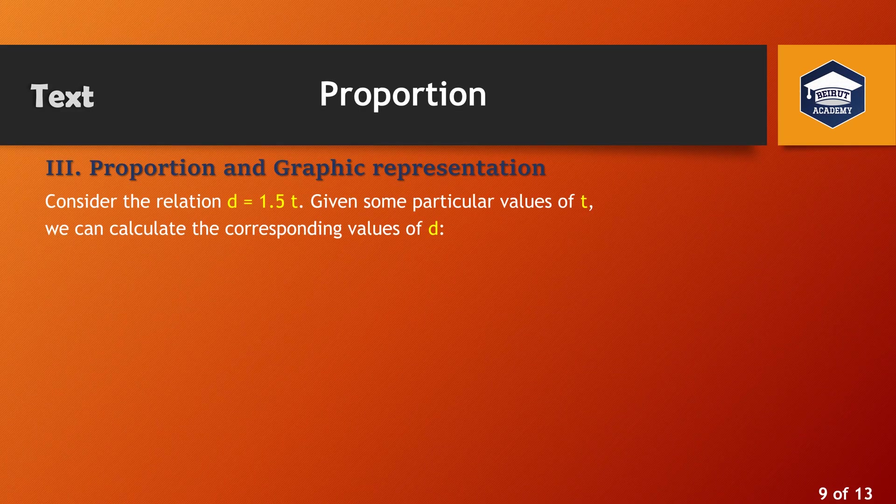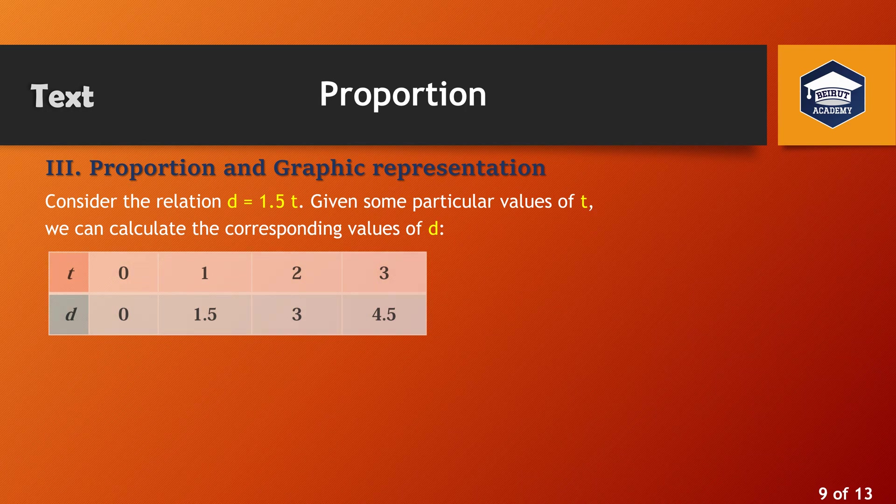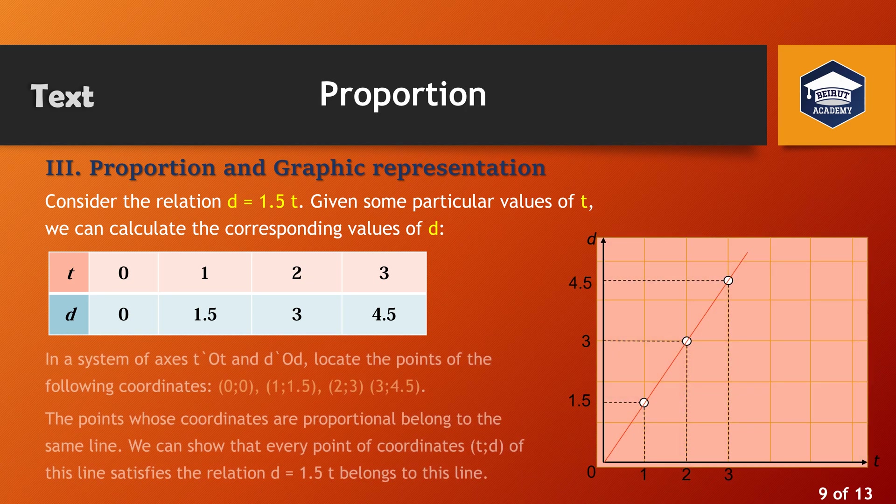Proportion and graphic representation. Consider the relation D equals 1.5 T. Given some particular values of T, we can calculate the corresponding values of D. In a system of axes T and D, locate the points of the following coordinates. The points whose coordinates are proportional belong to the same line. We can show that every point of coordinates of this line satisfies the relation D equals 1.5 T belongs to this line.